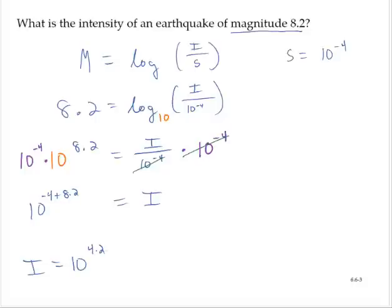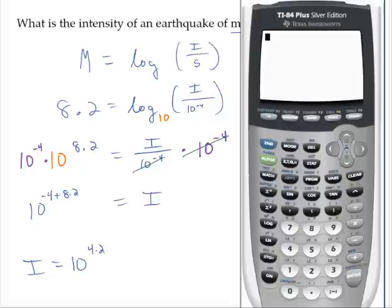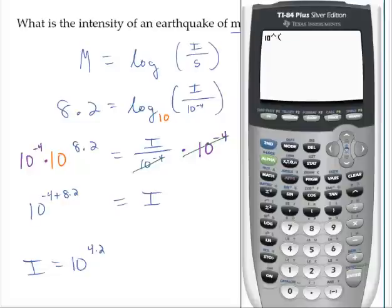Now let's go ahead and calculate that to get a number we can use. 10 raised to the 4.2 power is approximately 15,848.9, so it's 15,849.